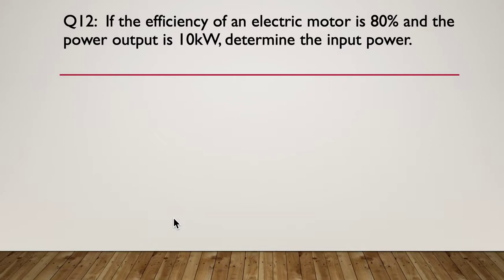Question 12. If the efficiency of an electric motor is 80% and the power output is 10 kilowatts, determine the input power. Pause here. Here's your hint. Transpose the energy efficiency equation. It's the energy efficiency equation, but you're going to have to transpose it.